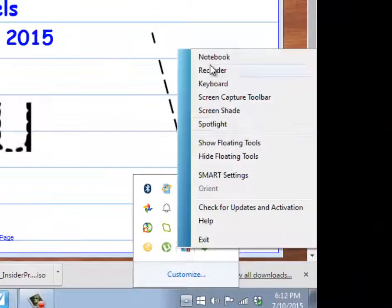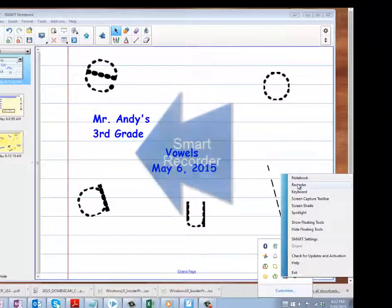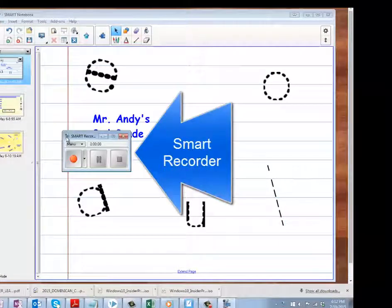It's called SMART Board. You right-click and you click on recorder and it'll pop up. That's one way to get the recorder. And here it is right here.